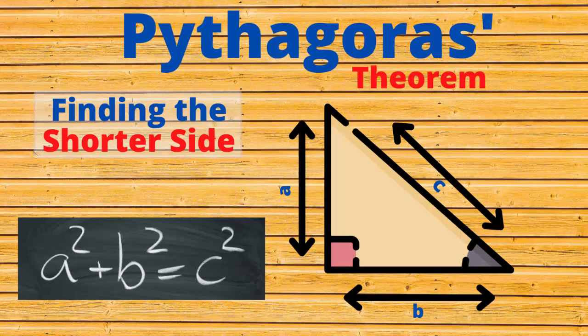Hello and welcome. In this video we're going to be looking at Pythagoras' Theorem and how to find the shorter side of a right-angled triangle. If you haven't already watched our previous video where we find the hypotenuse, the longest side, make sure you watch that first using the link above.